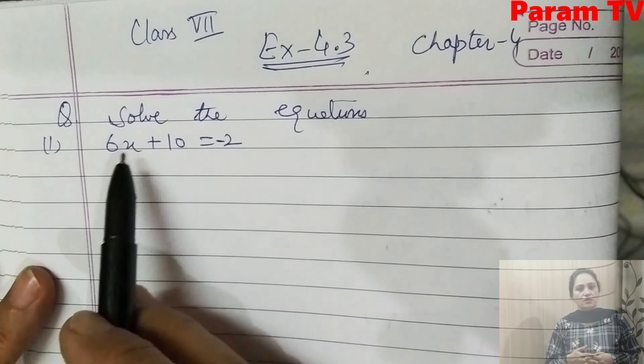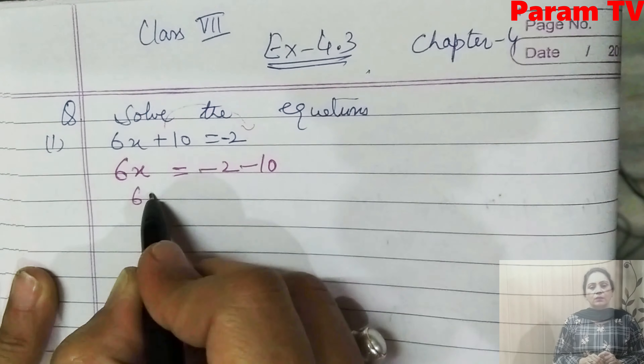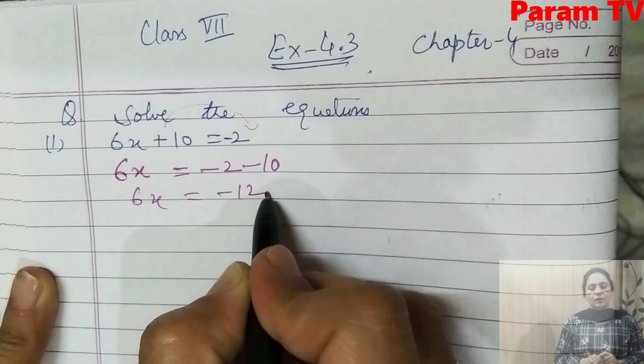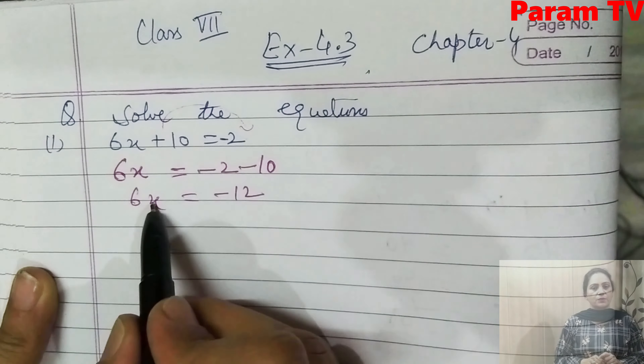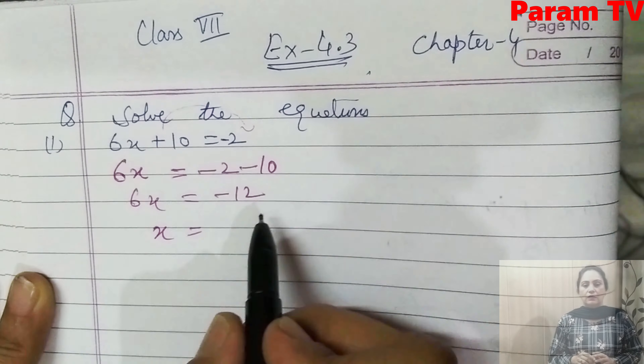Let's solve it. First question: solve the equations. First part — 6x + 10 = -2. Now I will change the place of this 10. I need to keep variable terms and constant terms separate. The -2 is on its own place, it will not change its sign. The 10 is changing sides, so it becomes minus 10. So 6x = -2 - 10 = -12.